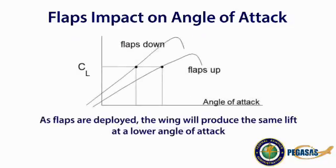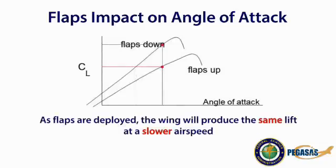Here is a graph of the coefficient of lift with flaps up and flaps down. Flaps allow us to maintain the same coefficient of lift at a lower angle of attack, which allows for variations in descent profiles. Or, flaps allow us to achieve a greater coefficient of lift for the same angle of attack, which provides for a reduction in approach speeds while maintaining the same amount of lift. Regardless of how a pilot utilizes flaps during an approach, it is important to determine if the angle of attack system being used is calibrated in multiple wing and flap configurations or in a single configuration.